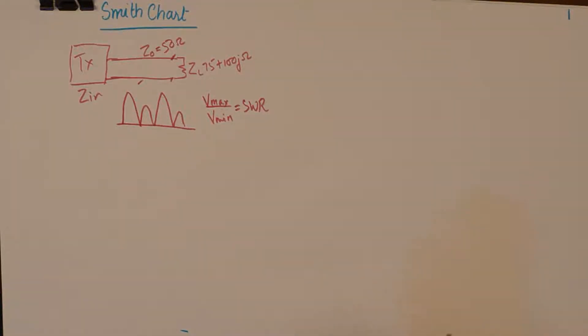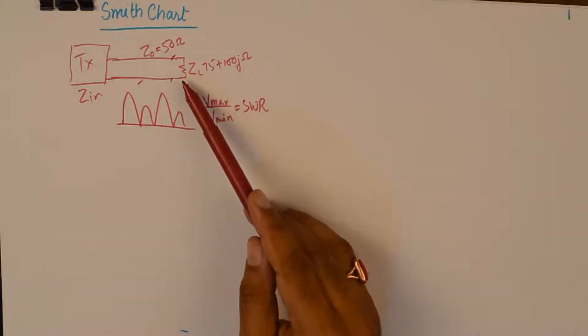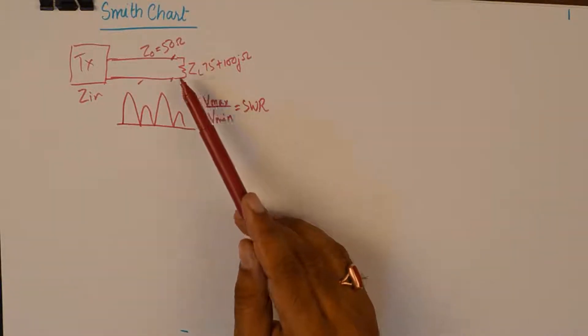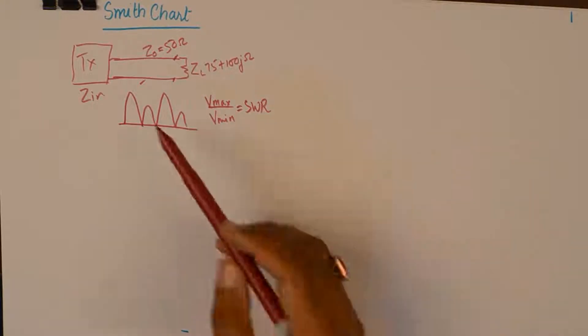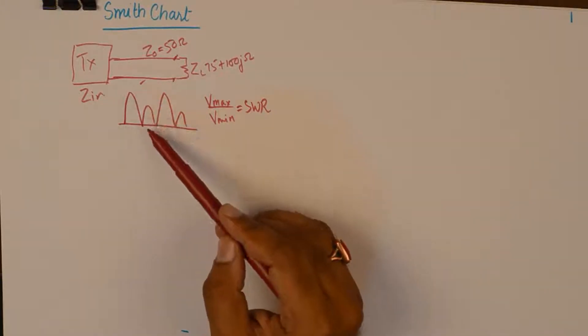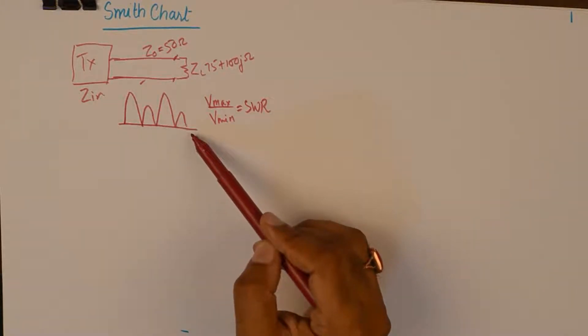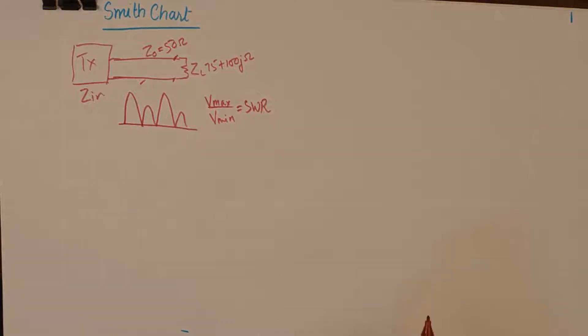Then you can expect a huge mismatch and you can expect some waves reflecting back to the system, which will eventually cause this kind of pattern to be made on the line and hence resulting in standing wave ratios.